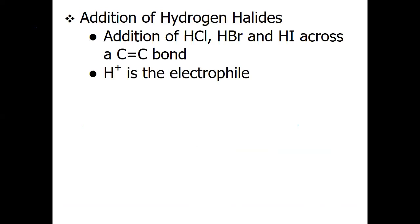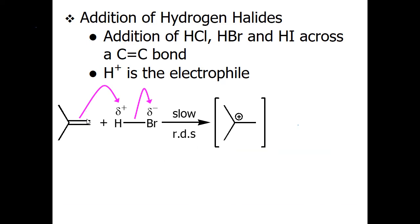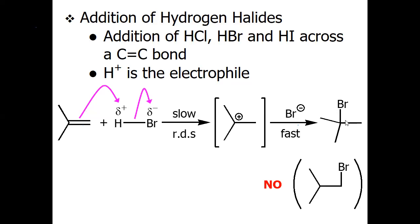Let's discuss examples of the addition of HCl, HBr, and HI across a double bond. In these cases, hydrogen is the electrophile and the halide is the nucleophile. For the specific example of HBr addition to an unsymmetrical alkene, H adds to give the most stable carbocation — the electrophile adds where the most stable carbocation is formed. This is the slow, rate-determining step. The bromide ion then attacks as a nucleophile to give the Markovnikov product.